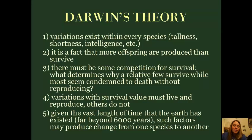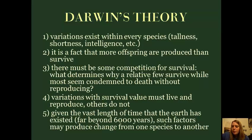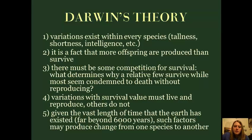As a philosopher, I like to take things in argument form. When I look at Darwin's theory, I break it down as follows. First premise: variations exist within every species — that's an empirical fact we know from observation. We know some people are taller, some shorter, some more intelligent; there's variation within the animal kingdom. Second premise: more offspring are produced than actually end up surviving — again, just a fact of nature. If we take these two premises together, we conclude there has to be some kind of competition for survival. What would otherwise determine why a relative few survive while most members of the species are condemned to death without reproducing? Darwin posits that it's the variations with survival value that live and reproduce, while the others don't.